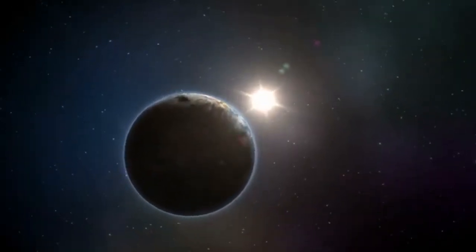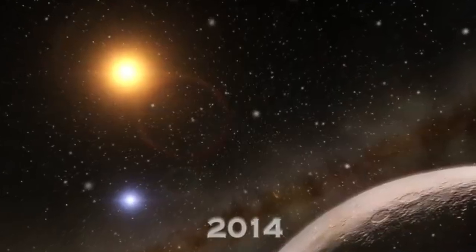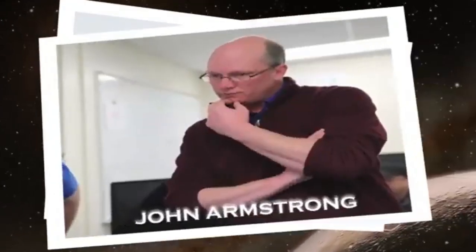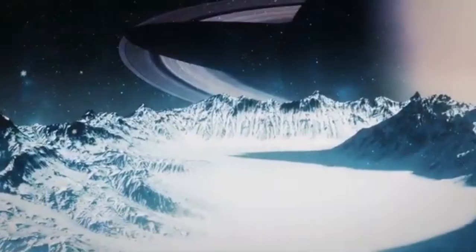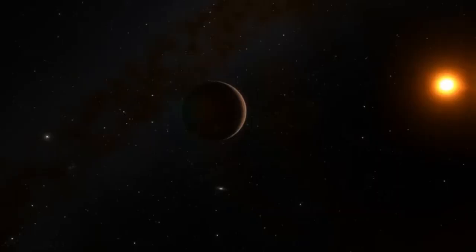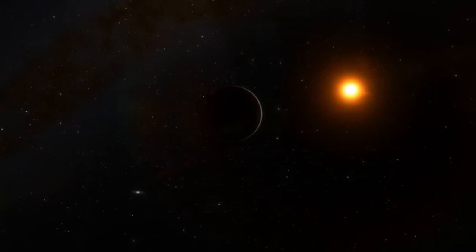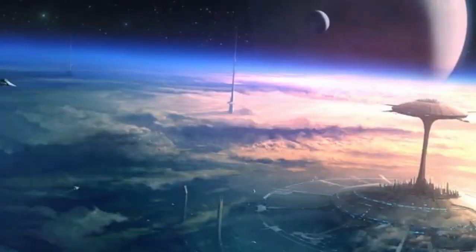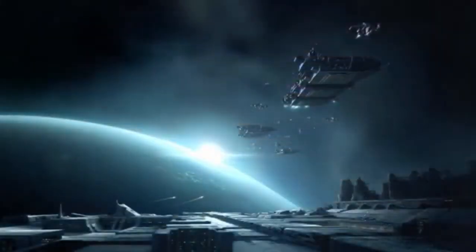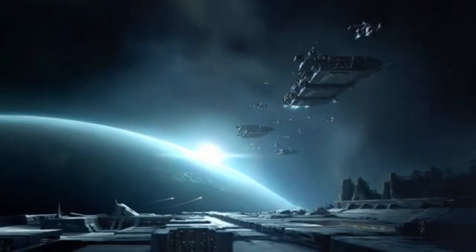These super-habitable exoplanets could harbor more biodiversity than Earth, thereby challenging the long-held assumption that our planet represents the pinnacle of life-supporting environments. There are even cases within our solar system, like Jupiter's moon Europa, which may host subsurface oceans capable of sustaining life. This example demonstrates that habitability can arise in environments quite different from Earth's surface.